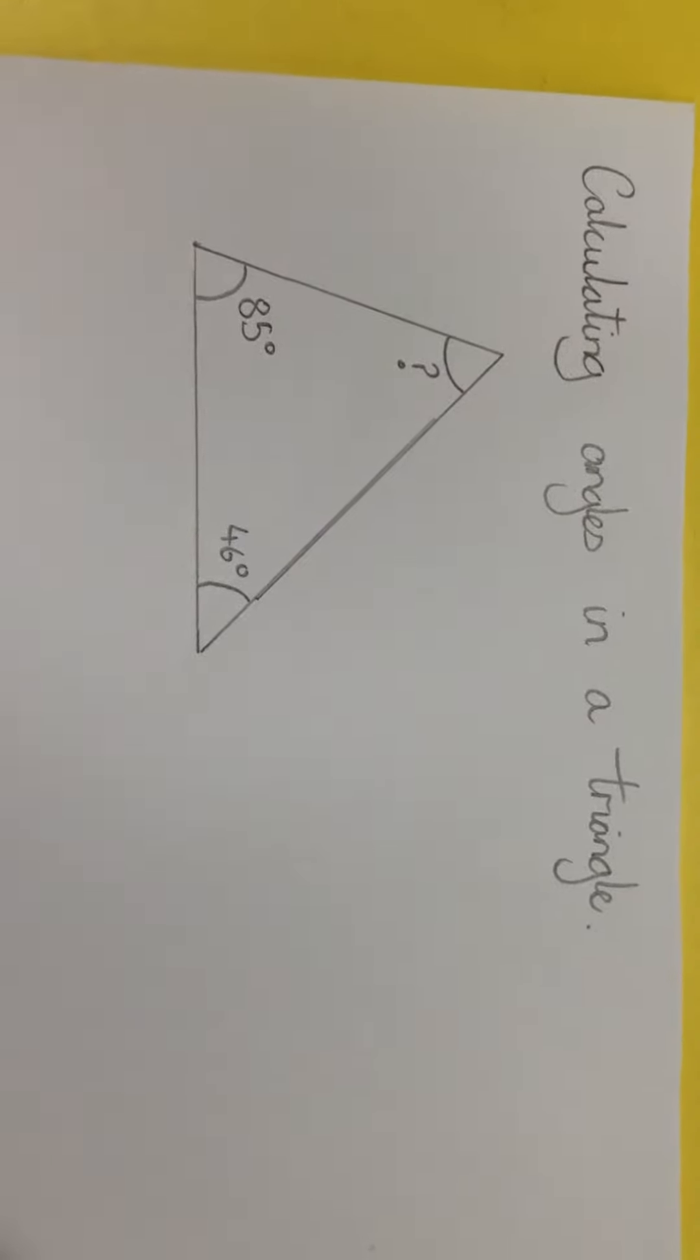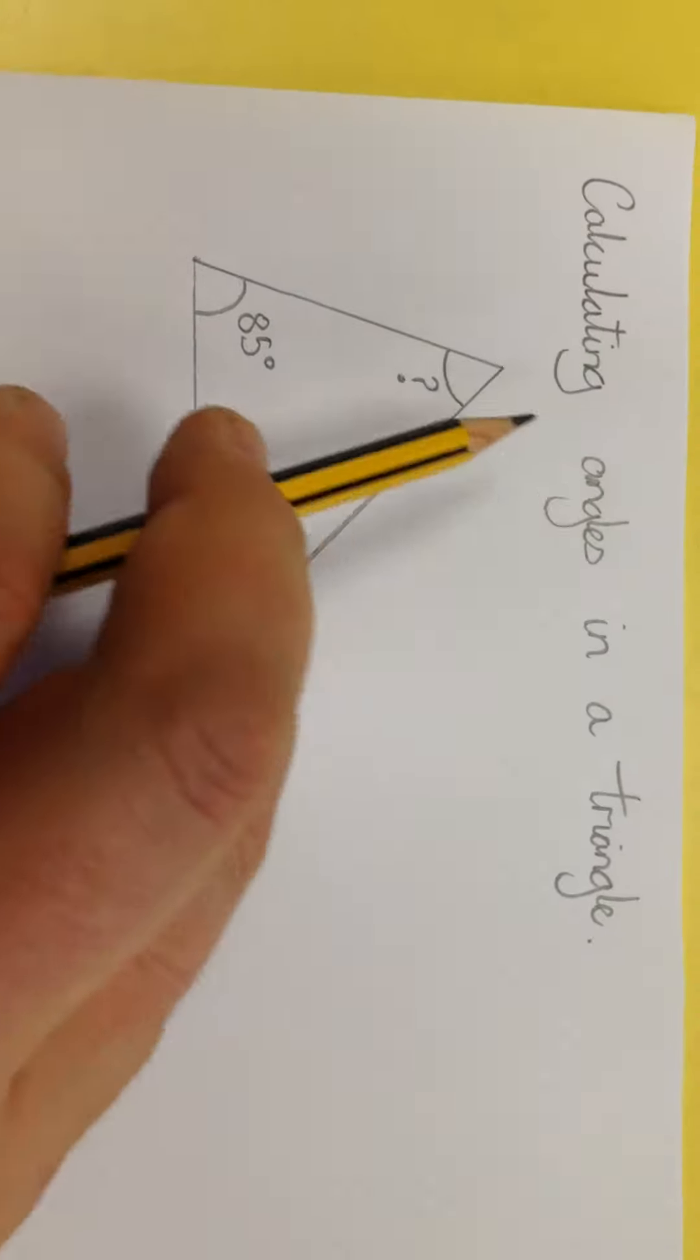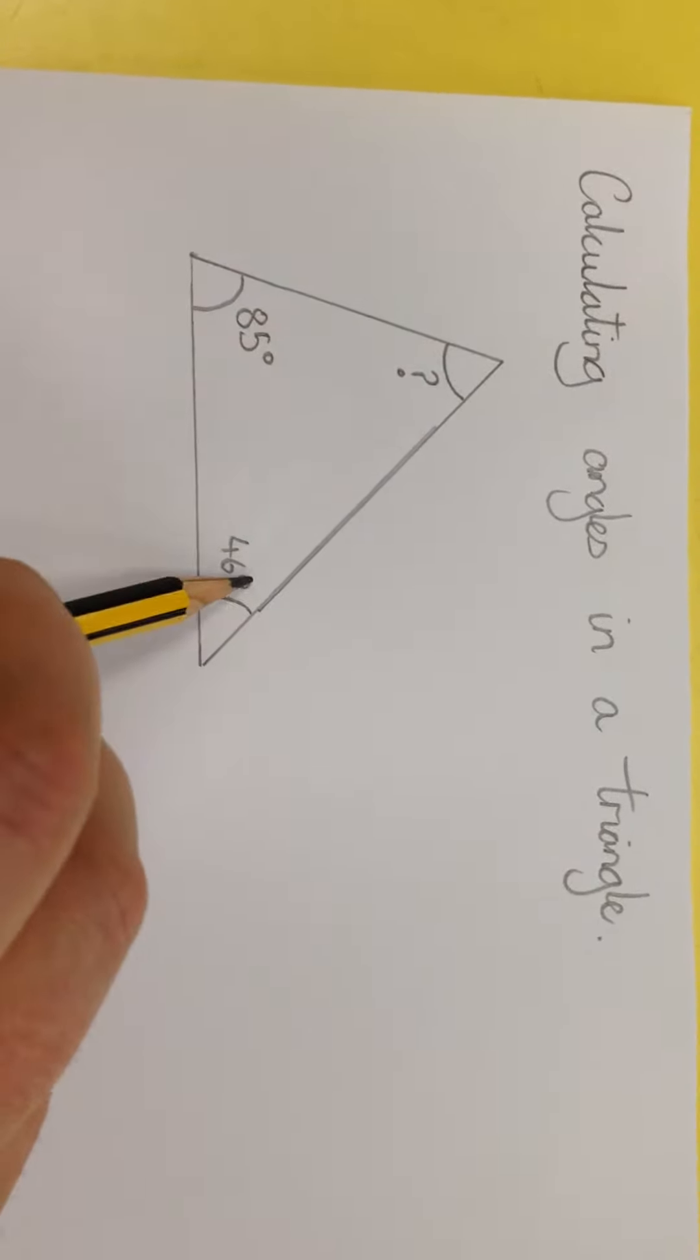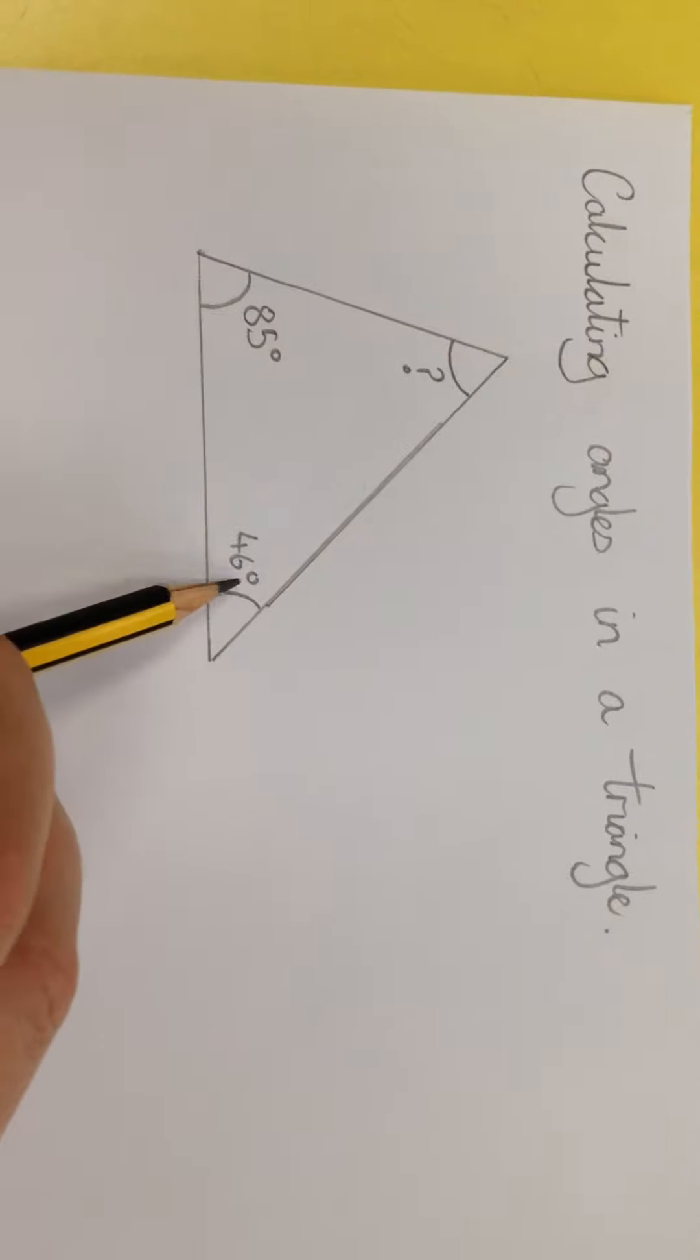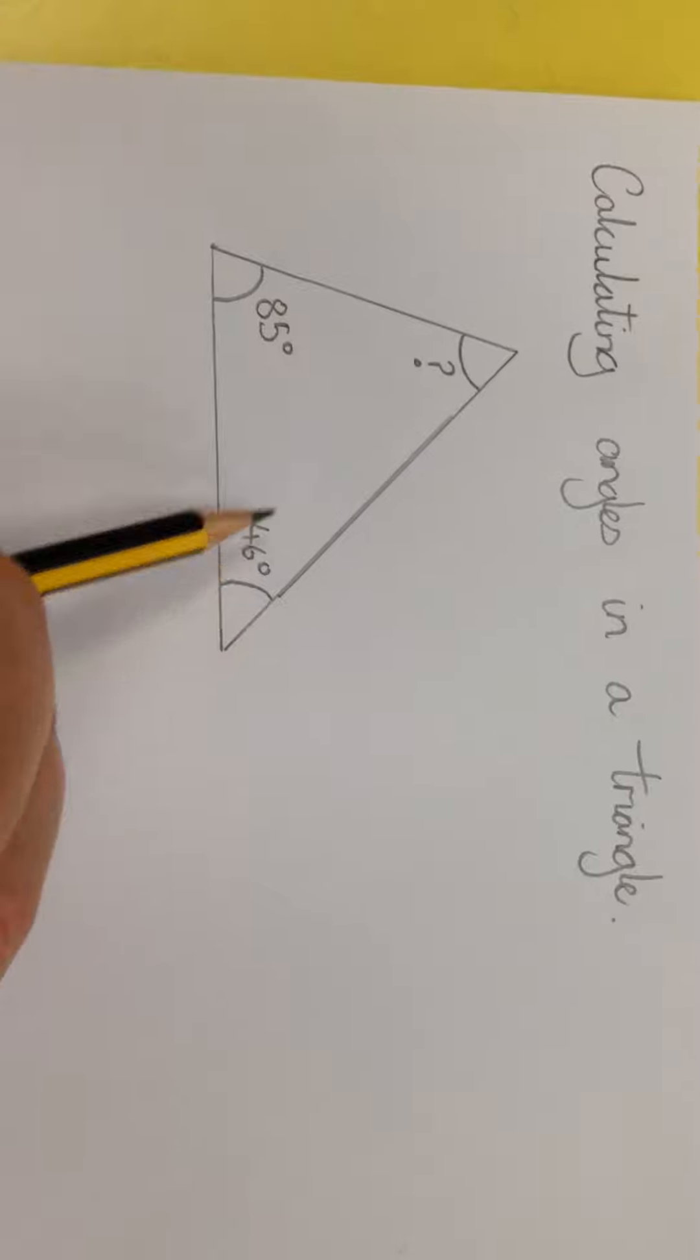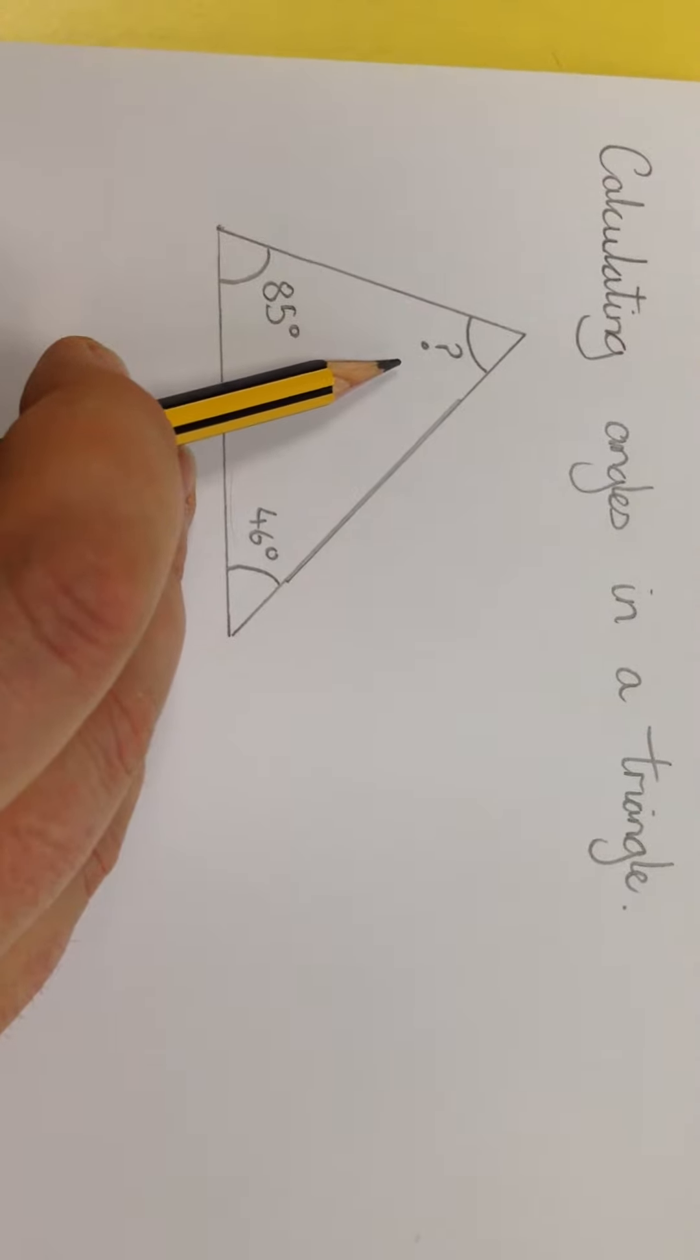In this one, we're going to calculate the angles inside a triangle. We start with a basic fact: all the interior angles in a triangle add up to 180 degrees. So all three of these, when you add them all up, would make 180 degrees.